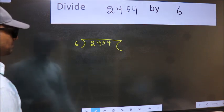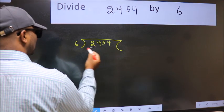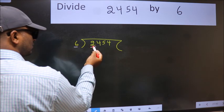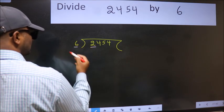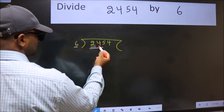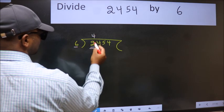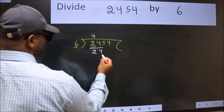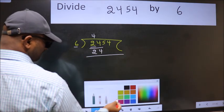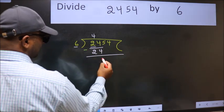Next, here we have 2 and here 6. 2 is smaller than 6, so we should take two numbers: 24. When do we get 24 in the 6 table? 6 times 4 is 24. Now we should subtract. We get 0.